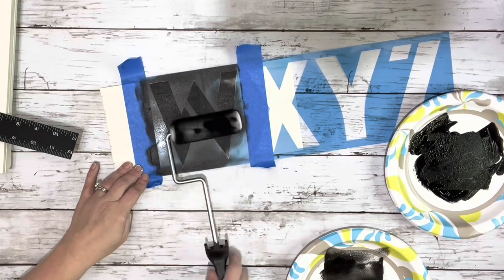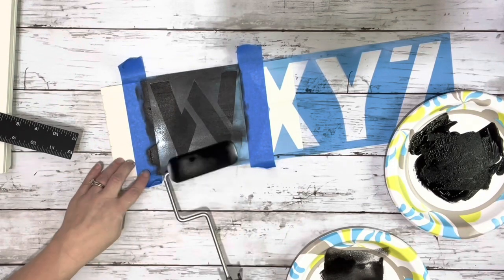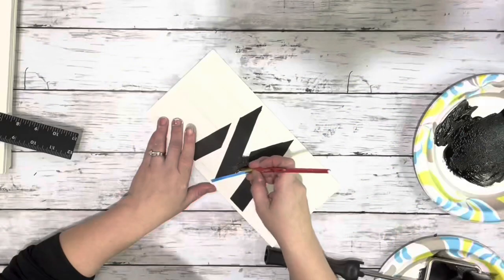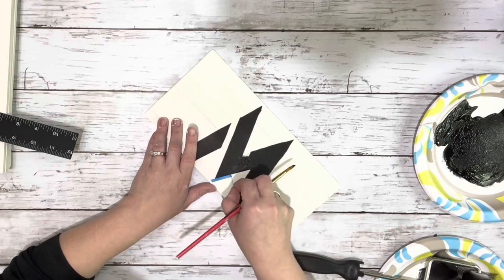And then once I removed the stencil, I used some painter's tape to make the lines nice and straight, and fill in those little gaps that the stencil created.